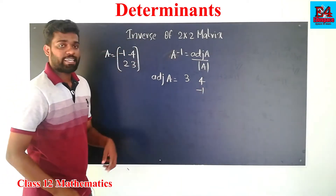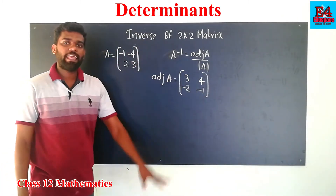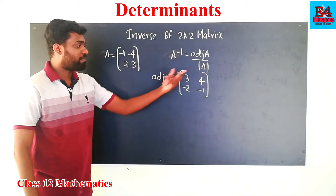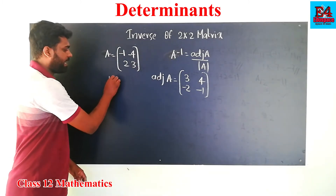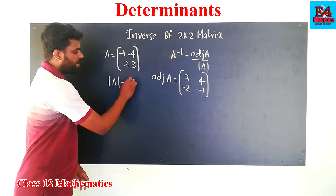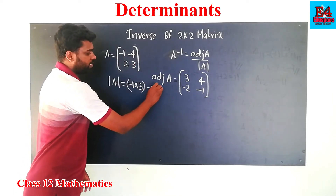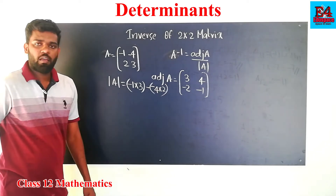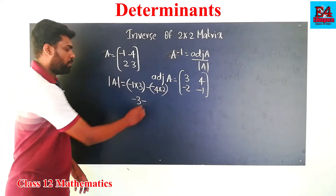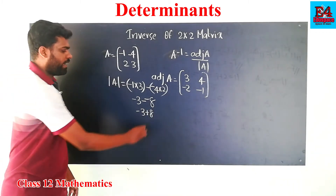The determinant of A is equal to: minus 1 into 3, minus 4 into 2. That is minus 3 minus minus 8, which equals minus 3 plus 8. That is 5.